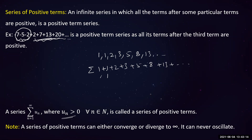The first two terms we can choose as we like, but from the third term onwards there is a specific rule: each term is the sum of its two preceding terms. To get the nth term in the series, you add the previous two values: uₙ = uₙ₋₁ + uₙ₋₂.